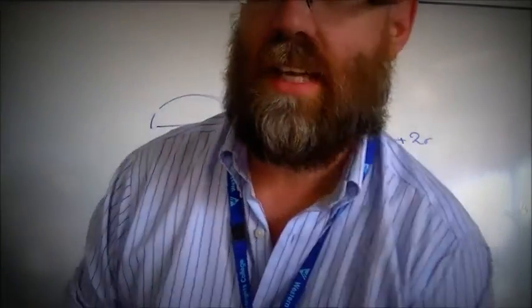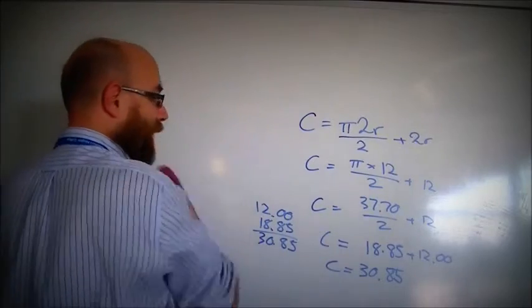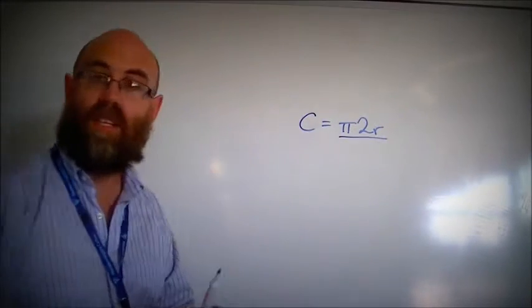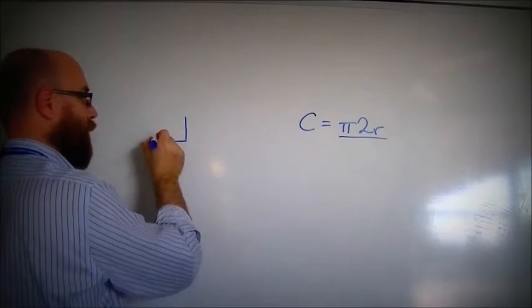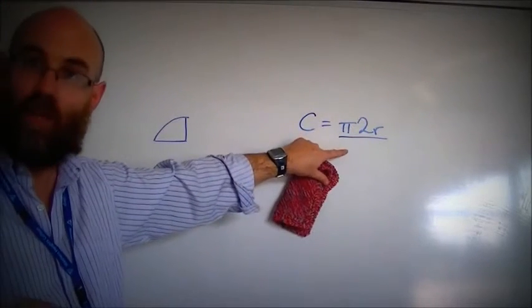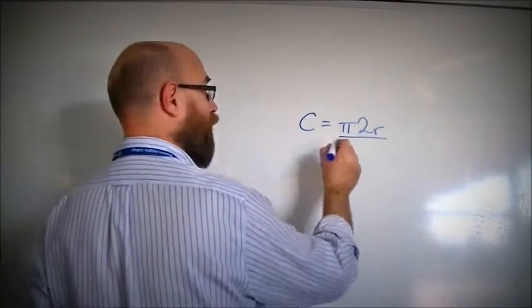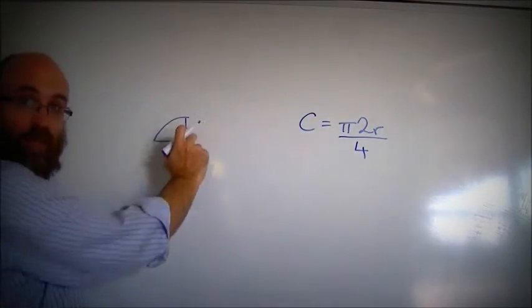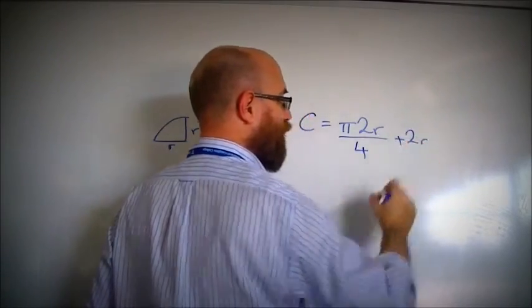I'm going to do this again with something that's a little bit more complicated, but I'm going to keep my equations basically. This time, I'm going to do a quarter of a circle. To work out the curve, I use my equation for a whole circle, and I only need a quarter of it, so I'm dividing it by 4, and I've got two of these radius bits here. These are both r, so it's plus 2r.